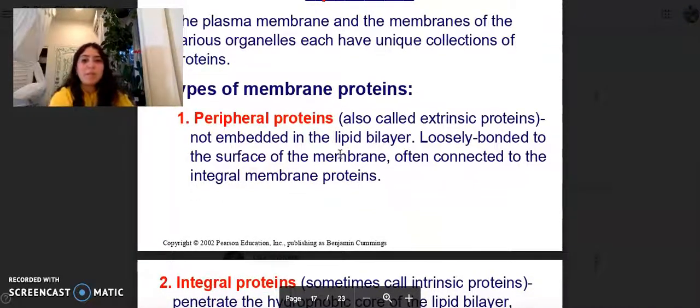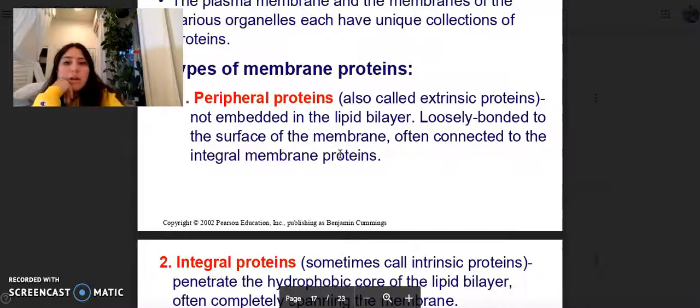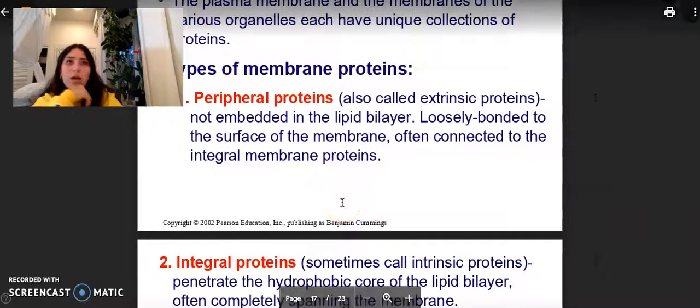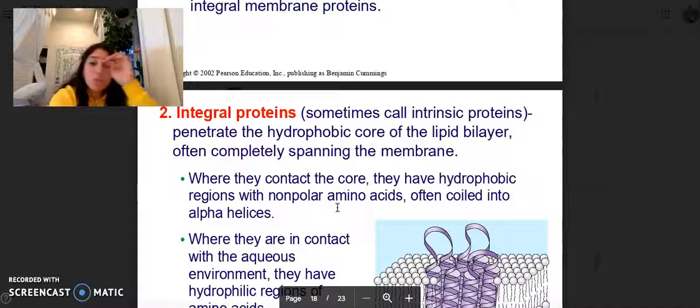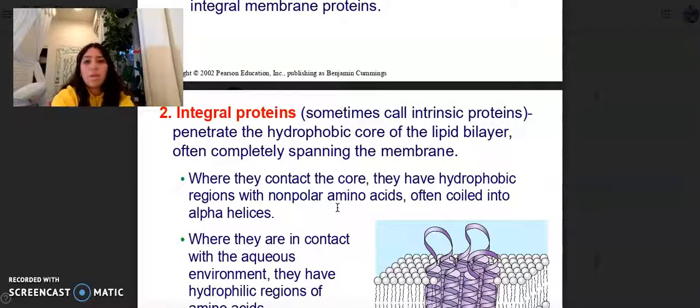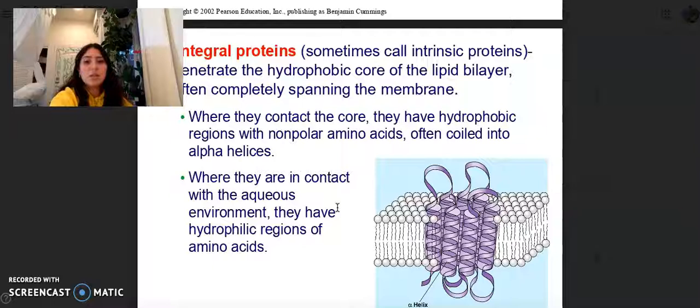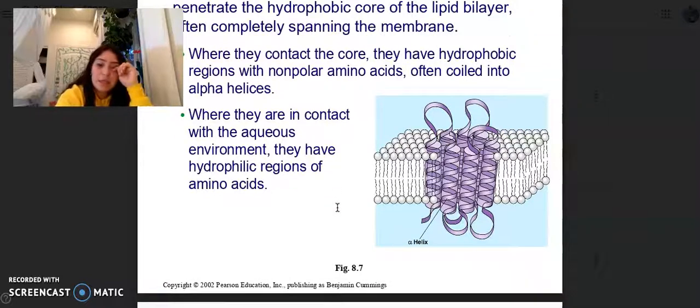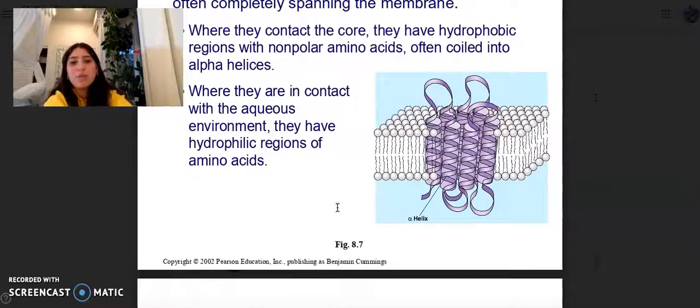There are two types of proteins. Peripheral proteins, also called extrinsic proteins, are not embedded into the lipid bilayer. They are loosely bonded to the surface of the membrane and often connected to the integral membrane protein. If you guys remember in that phospholipid diagram, it was just sitting on the top. And then integral proteins, sometimes called intrinsic proteins, penetrate the hydrophobic core of the lipid bilayer, often completely spanning the membrane. Where they contact the core, they have hydrophobic regions with nonpolar amino acids, often coiled into alpha helices. And when they're in contact with the aqueous environment, they have hydrophilic regions of amino acids.